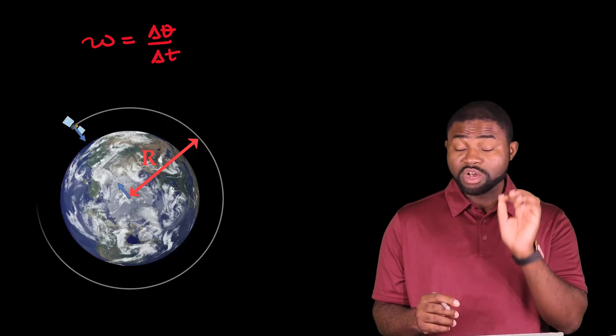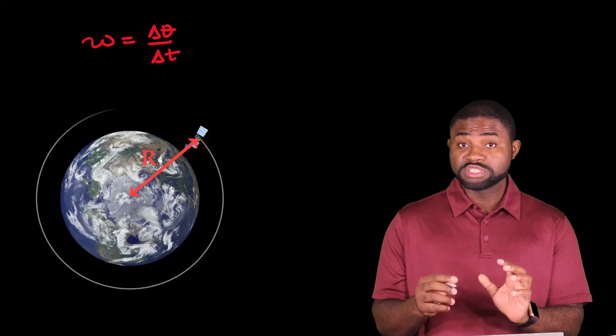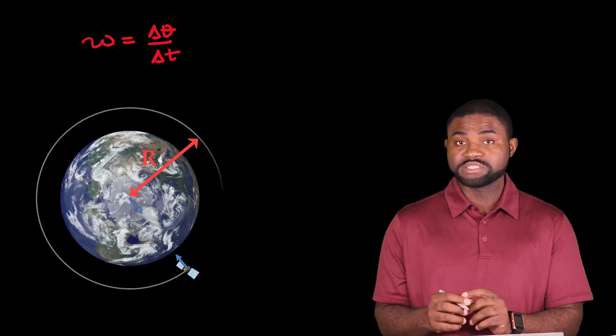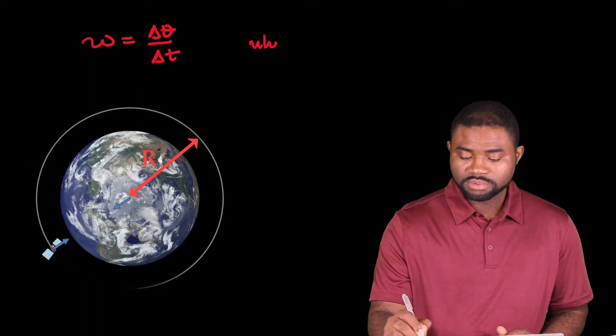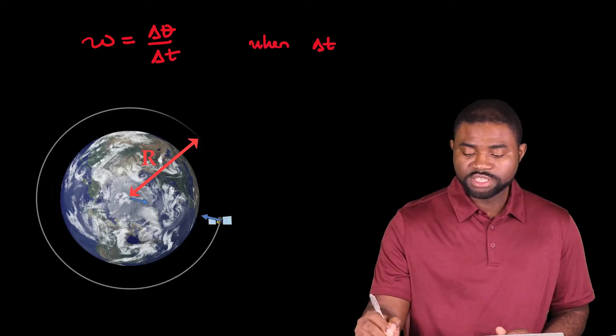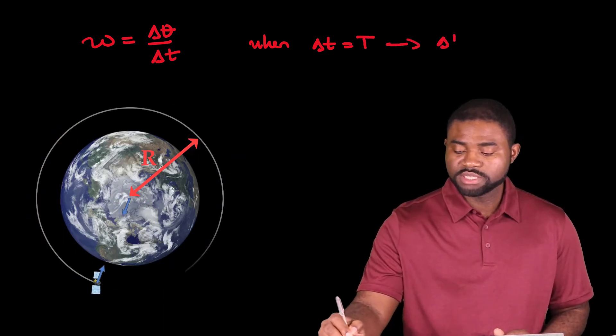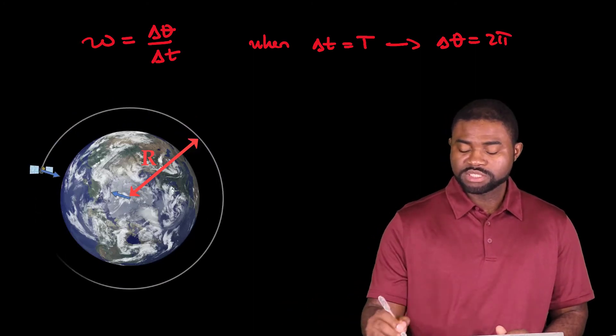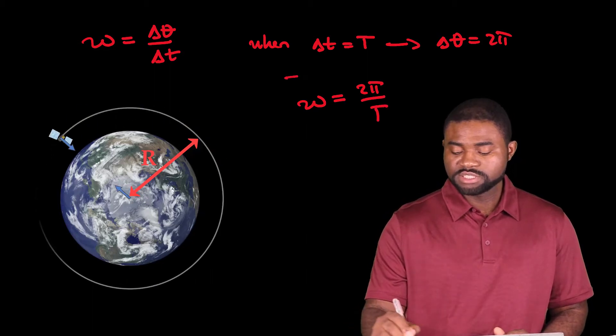Now, when the object goes around the circle once, the total displacement, the total angular displacement of the object is 2 pi. In other words, when delta t is equal to the period, it implies that delta theta is equal to 2 pi radians. As a result, Omega will be equal to 2 pi all divided by t.